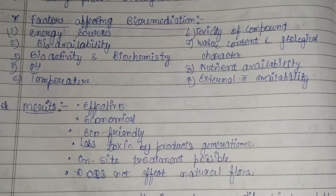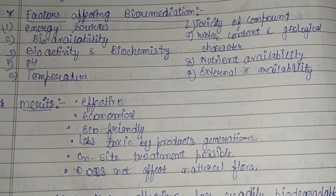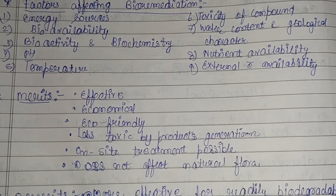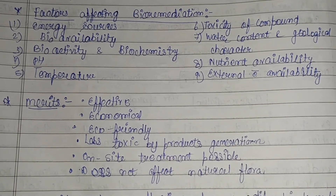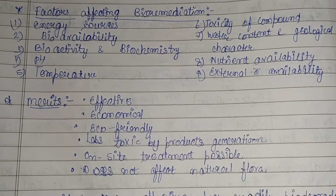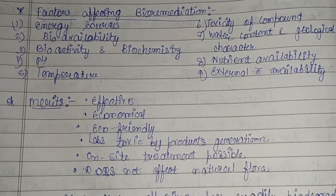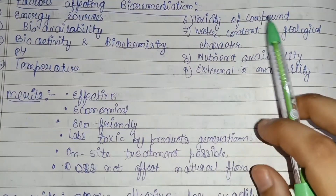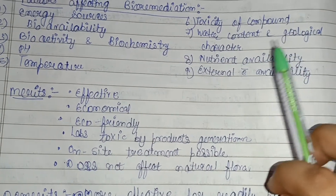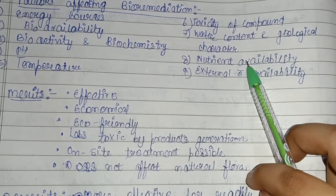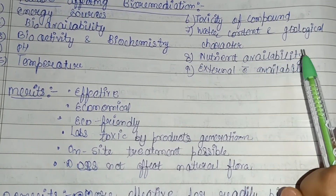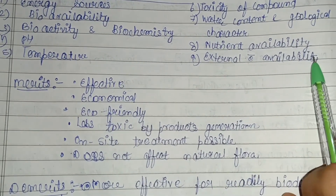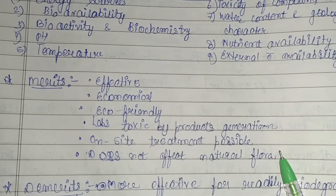The factors affecting bioremediation include: energy sources, bioavailability of contaminants to microorganisms, bioactivity and biochemistry of the microorganisms, pH, temperature, toxicity of the contaminant, water content, geological characteristics, nutrient availability for microbial growth, and external electron acceptor availability.